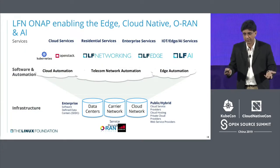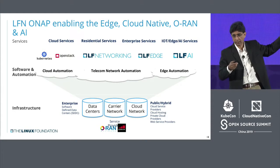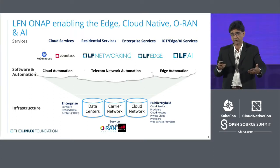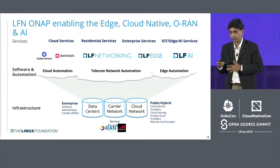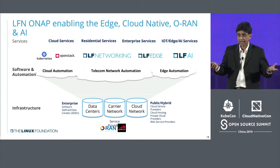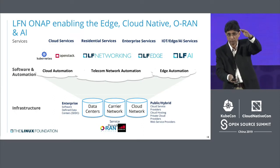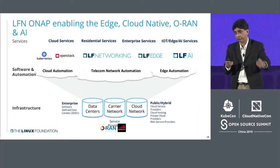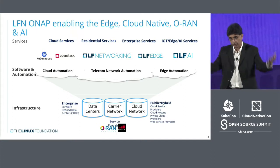When we make things happen, the stack looks very simple. End users make money from cloud services, residential services, enterprise services, or IoT AI services, and they run those on infrastructure — data centers, carrier networks, cloud networks, public, hybrid, or private. The layer in the middle is the plumbing, the glue that needs to be automated. That's the project focus for LF Networking, LF Edge, Kubernetes, and LFAI.